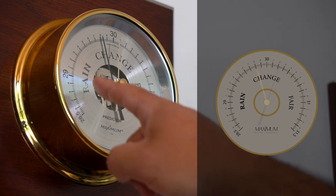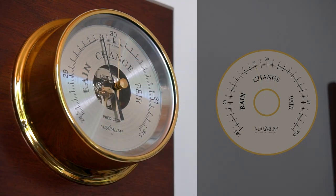On the dial, you'll notice the rain, change, and fair nomenclature. When the barometric pressure is trending towards rain, you can expect cloudy weather and possibly rain as rain is associated with lower pressure systems.